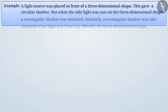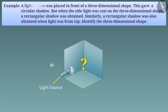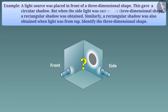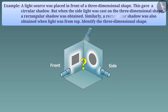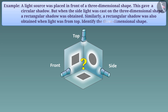Next example: a light source was placed in front of a three-dimensional shape, giving a circular shadow. When light was cast from the side, a rectangular shadow was obtained. Similarly, a rectangular shadow was also obtained when light came from the top. Identify the three-dimensional shape.